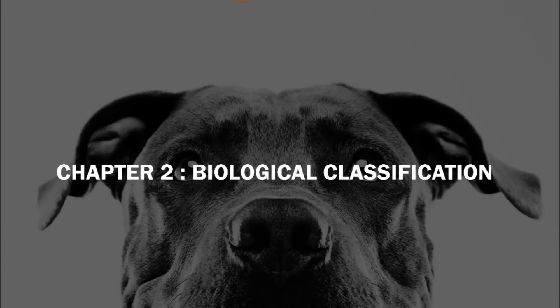Dinoflagellates: These organisms are mostly marine and photosynthetic. They appear yellow, green, brown, blue or red depending on the main pigments present in their cells. The cell wall has stiff cellulose plates on the outer surface. Most of them have two flagella — one lies longitudinally and the other transversely in a furrow between the wall plates. Very often, red dinoflagellates undergo such rapid multiplication that they make the sea appear red (red tides). Toxins released by such large numbers may even kill other marine animals such as fishes.